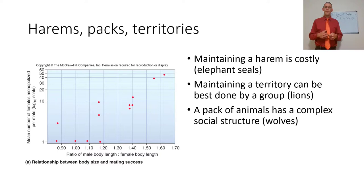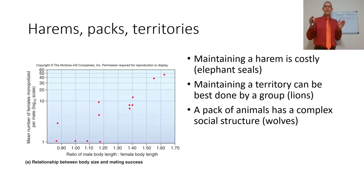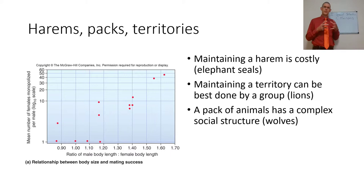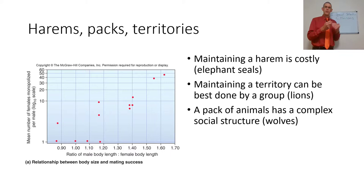Maintaining territories can also be done by a group. What's stronger than a lion? Two lions. Sometimes two brothers will live together and fight off single male lions. One will be dominant over the other, but both will mate with females — that's again polygyandry. These male lions form a pride. You can also have packs of animals where, depending on genetic relatedness, they may gain fitness from the alpha male and female having offspring because that offspring is related to them. A complex social structure forms where some organisms are mating and some are just protecting.